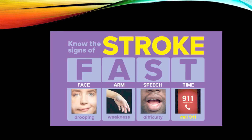For public awareness, the FAST acronym helps identify stroke: F — Face, with deviation or drooping indicating facial palsy; A — Arms and legs showing weakness; S — Speech difficulties; T — Time to call emergency services.